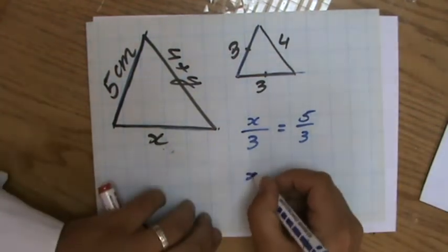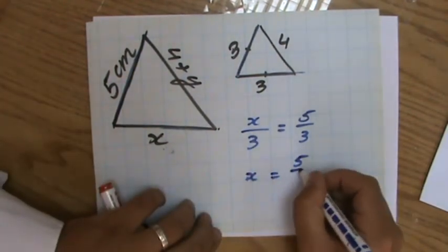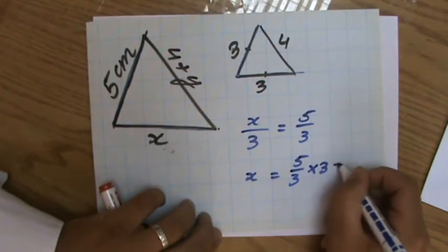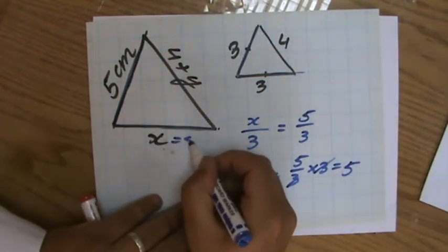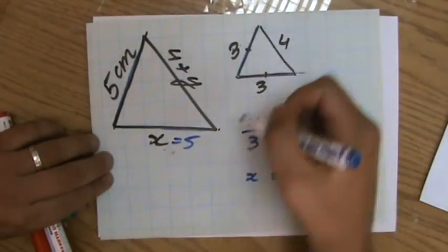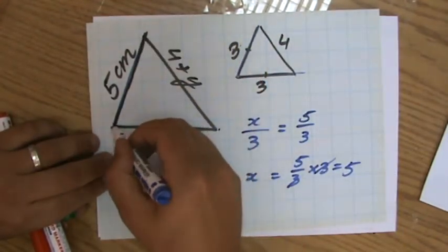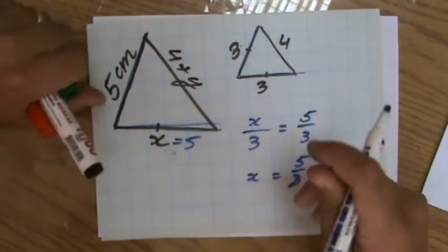Yeah. So X equals five over three times three. Yeah, which is five. Yeah, of course it's five. Because it's an isosceles triangle. Do you see that? So this has to be an isosceles triangle as well for them to be similar.